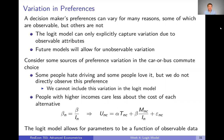First, I want to talk about variation in preferences. We might think that different decision makers have different preferences, and they might vary for many reasons — some that we might be able to observe and some that we might not. Different people might have different marginal utilities for different attributes of a good. Some people want a car that's fast, some want torque, some want fuel efficiency — these all affect which car people choose.